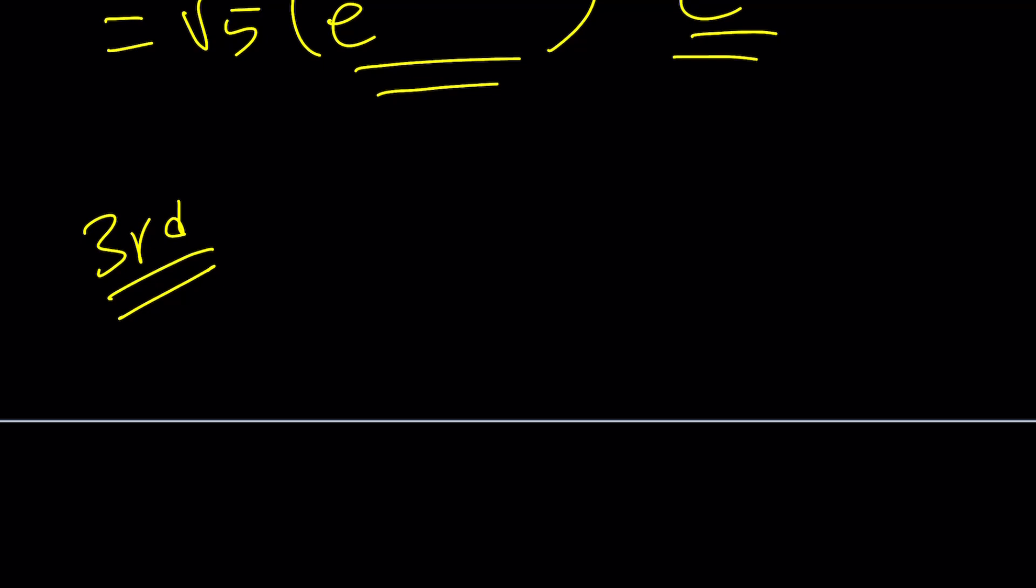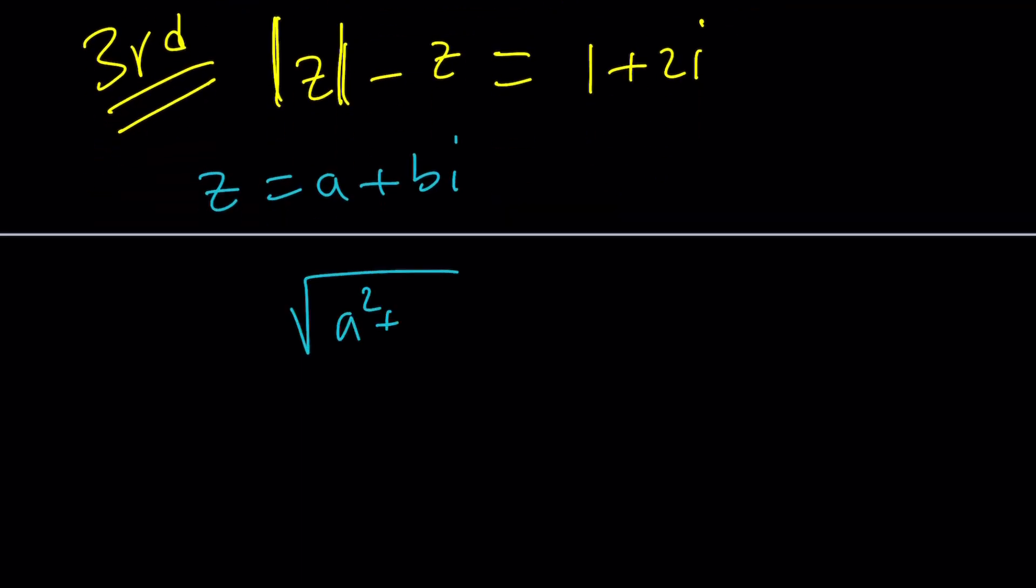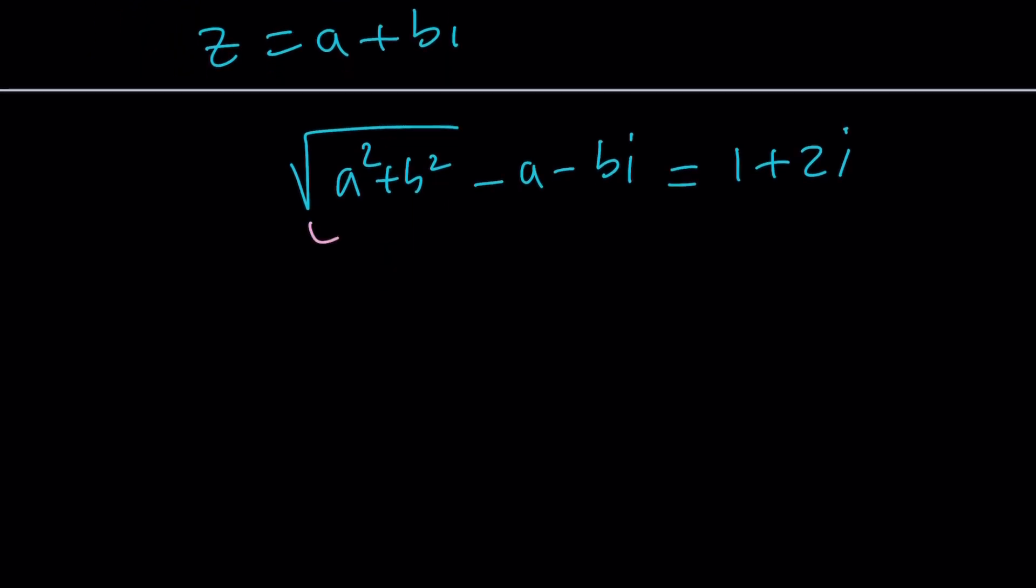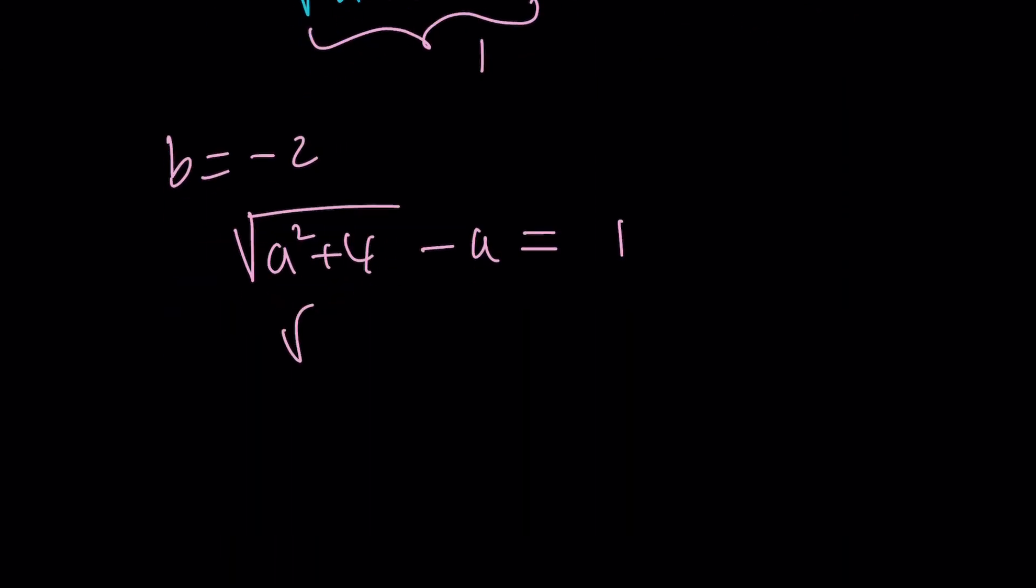Let's go ahead and take a look at the third approach, which is usually the common method used for these kinds of problems, which is kind of better. And that will be the standard form. Replace z with a plus bi, what's the name of this channel. And then you're going to get the square root of a squared plus b squared minus a minus bi is equal to 1 plus 2i. And then we're going to go ahead and solve an equation here. This is the real part that's equal to 1, and b is supposed to be negative 2 because that's the imaginary part. So now go ahead and write down our first equation: a squared plus 4 minus a is supposed to equal 1. Go ahead and add a to both sides, the rest will be a piece of cake, and then square both sides, you want to get rid of the radical.